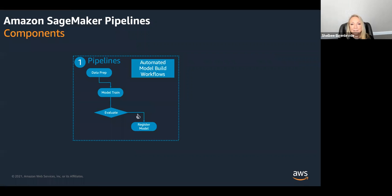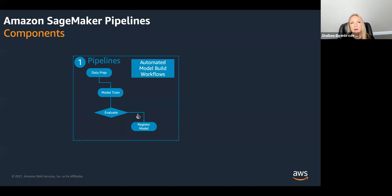Pipelines really has three components to it. The first component is Pipelines itself. A little bit confusing, but we do have a component called Pipelines within SageMaker Pipelines. What Pipelines is really focused on is building out automated workflows specifically for model building activities — things like data preparation, model training, model evaluation, all of those things that happen in the model build or model development stage, automating all of those workflows.